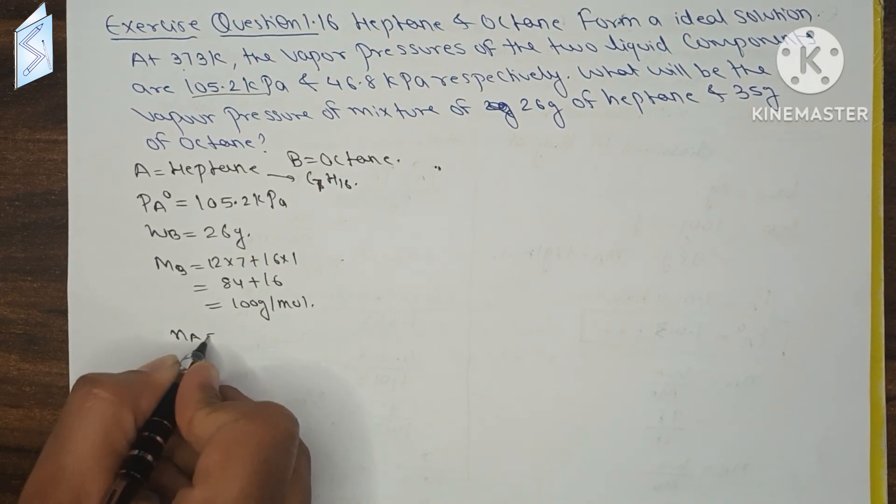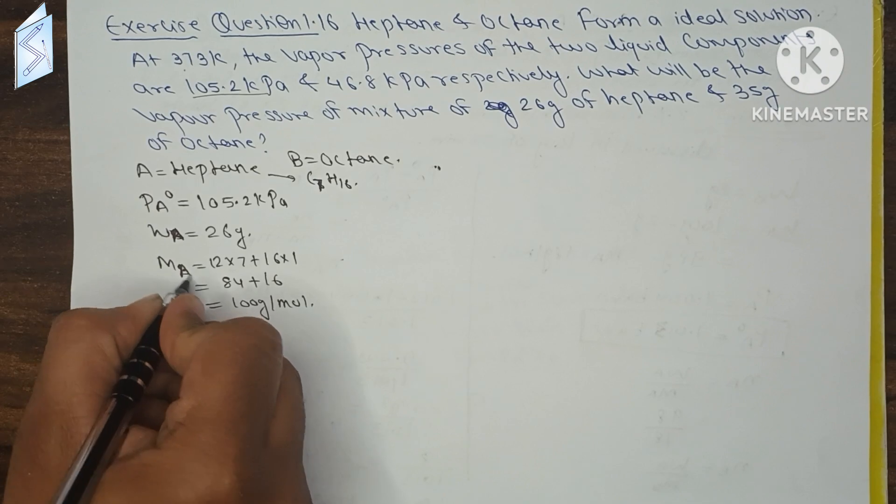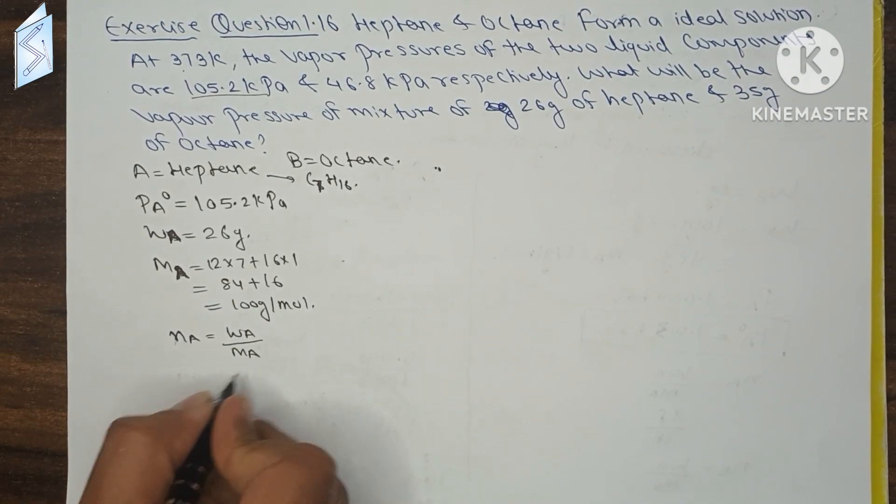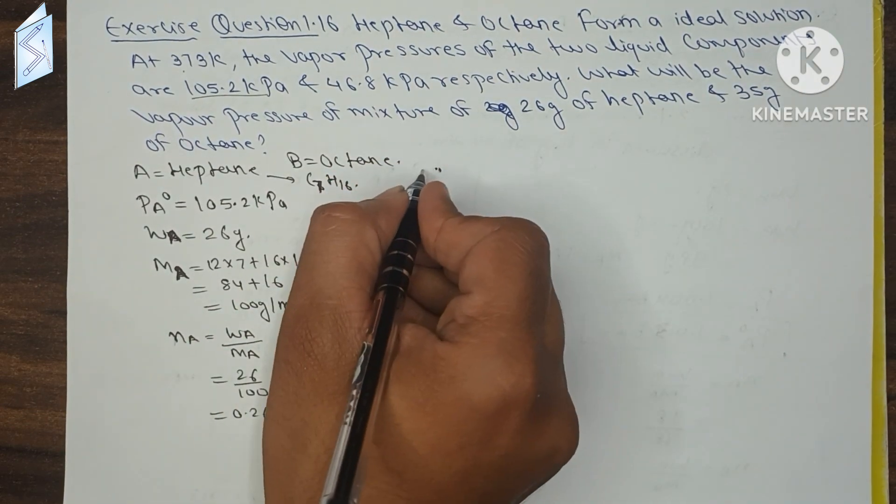So NA will be WA by MA, which is 26 by 100, which equals 0.26 mol.